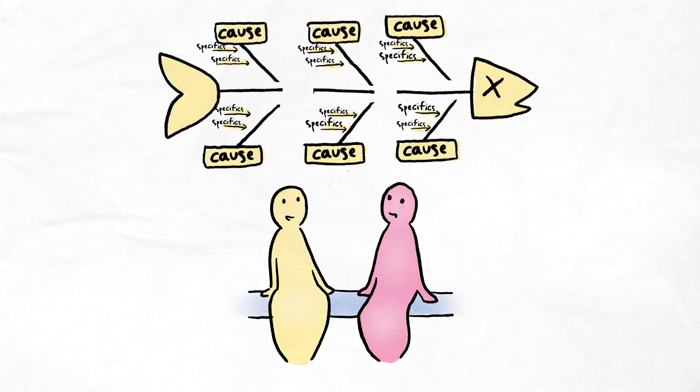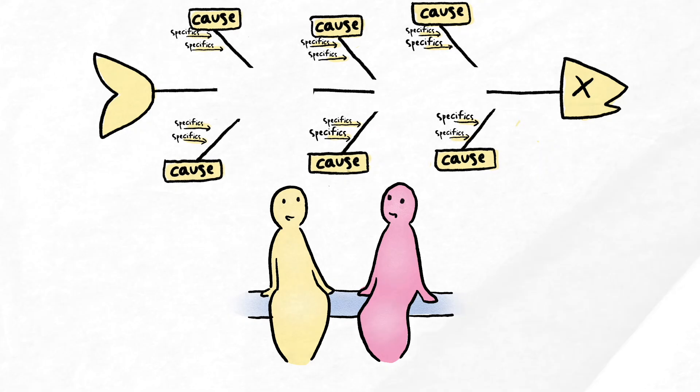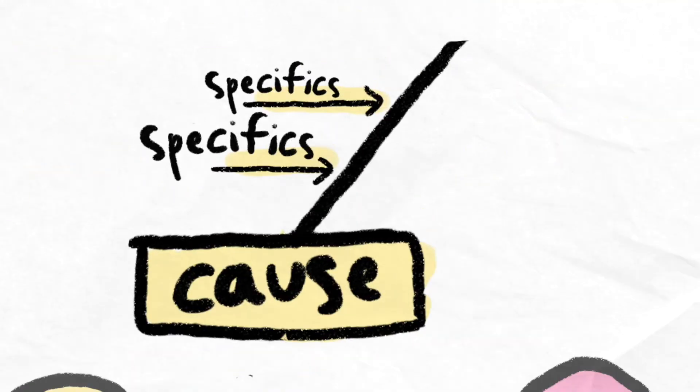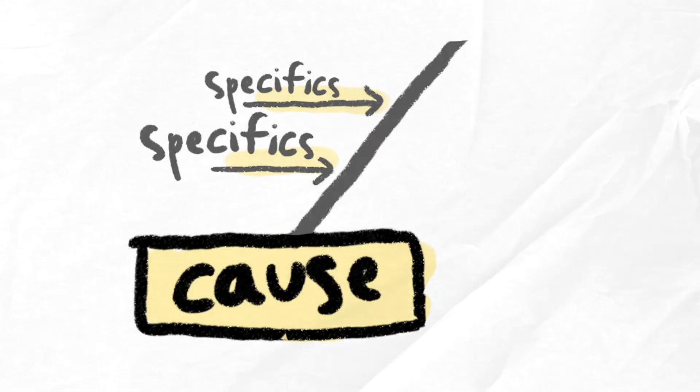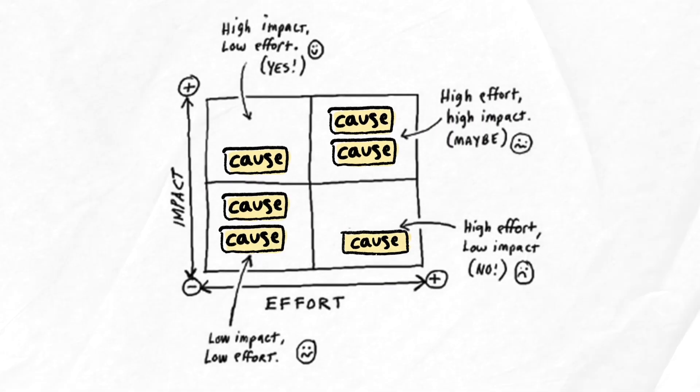A fishbone diagram helps your team to take a problem that seems really big and break it down into its component parts. While the problem as a whole may seem too big to tackle, once the team has identified factors that are contributing to it, we can talk about which of these we think are the most high leverage to focus on and we can start to act there.